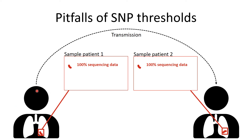To make the problem of within-host diversity for clustering analysis very clear, consider this schematic. Patient A transmitted tuberculosis to Patient B — specifically the red strain. We sequence both strains and compare the genomes. Because there is no within-host diversity, all sequencing data comes from the red strain in both patients, the genomes are identical, and we correctly conclude they share the same genotype and are linked by recent transmission.